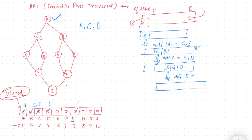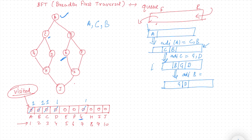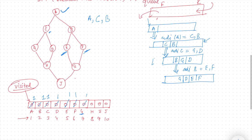Similarly, I will pop out B and check the adjacent of B. The adjacent of B in the graph are E and F. E is not visited — mark it as visited and put it in the queue. F is not visited — mark it as visited and put it in the queue.